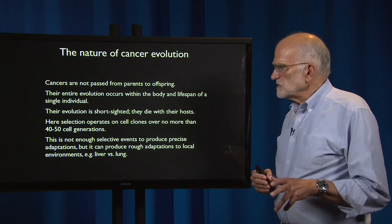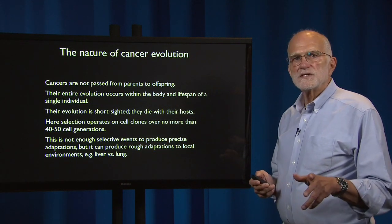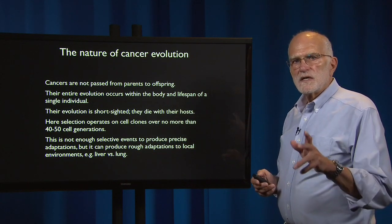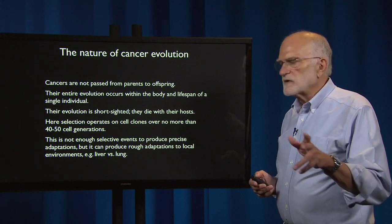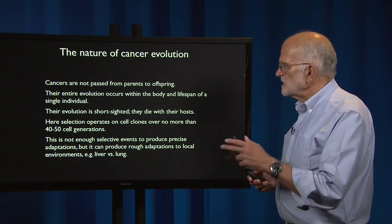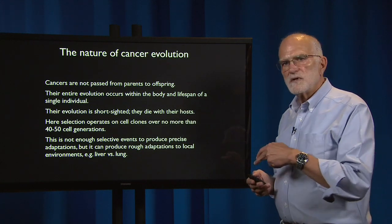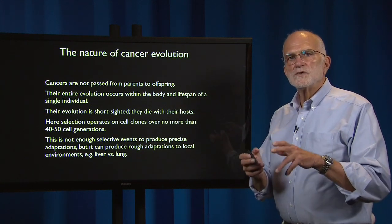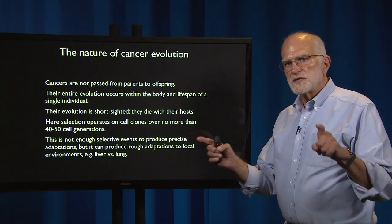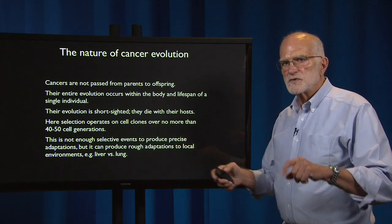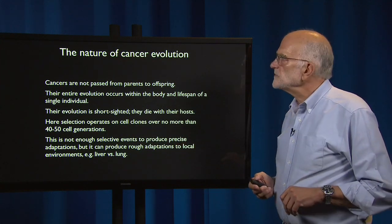A metastasis to a liver, for example, can have different characteristics than a metastasis to a lung, and you can show that those differences have something to do with those two environments.